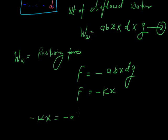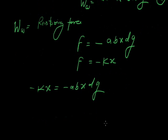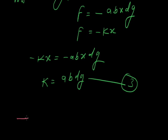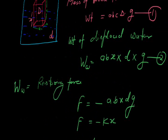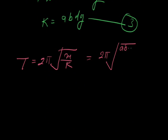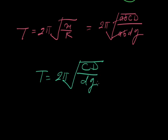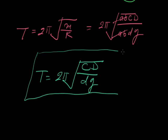Minus Kx equals minus A·B·X·d·G, so K equals A·B·d·G. We know that the time period T equals 2π√(M/K). M is the mass of the block, equal to A·B·C·D. K is A·B·d·G. Cancelling A·B, the time period T equals 2π√(C·D / (d·G)). This is the time period of a wooden block floating in water when displaced by depth x.